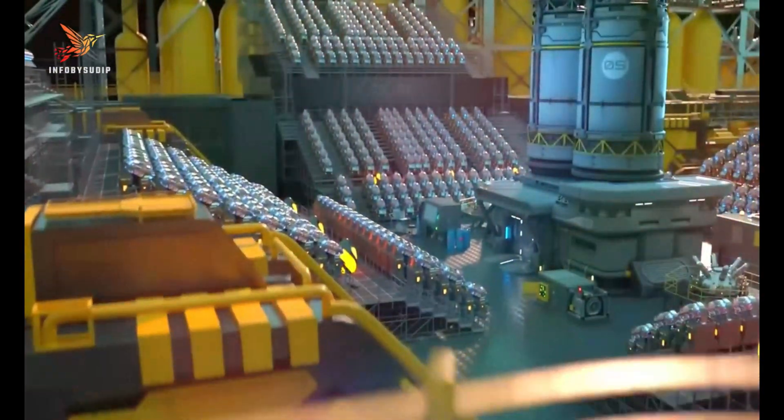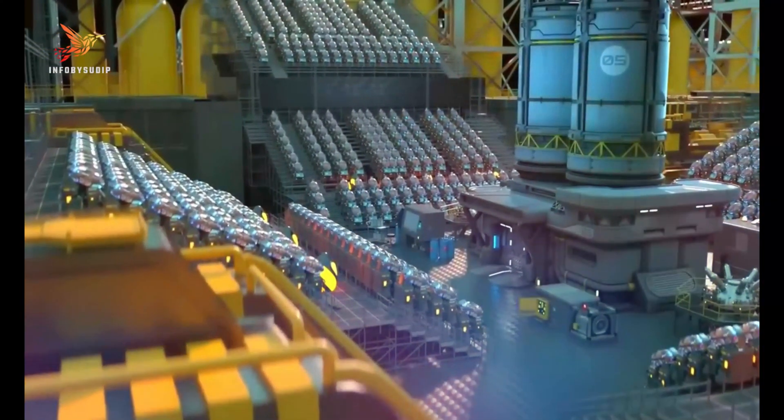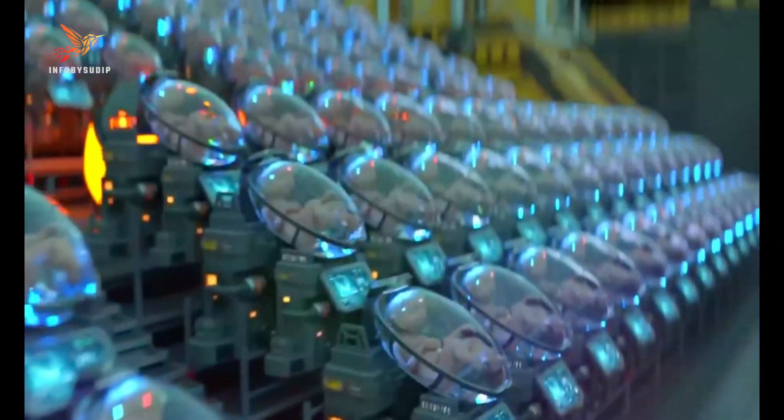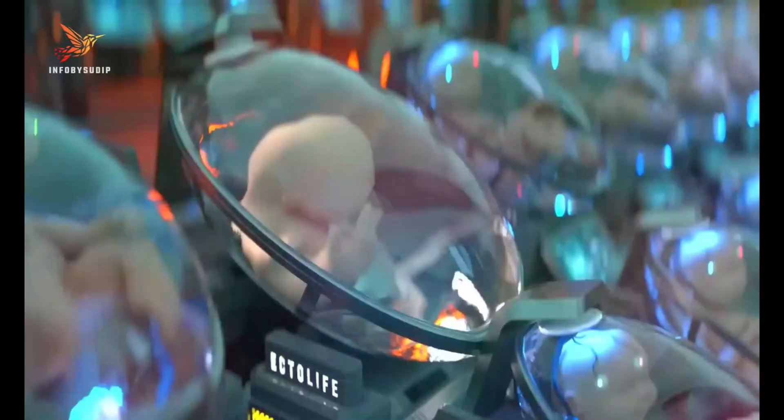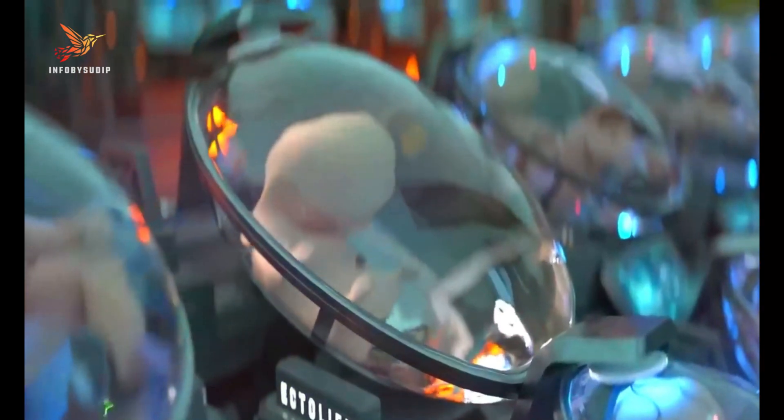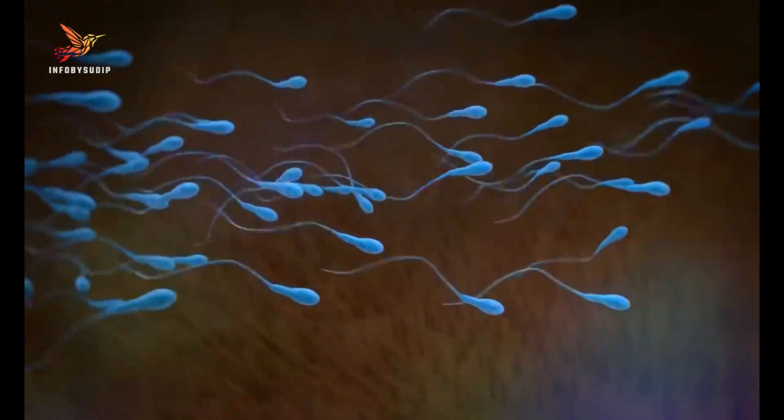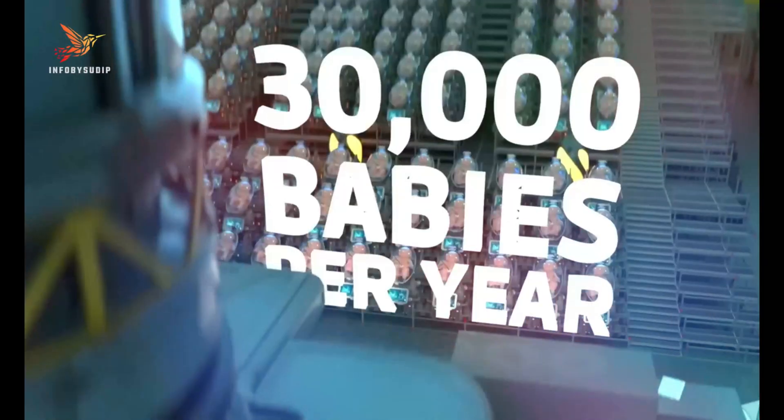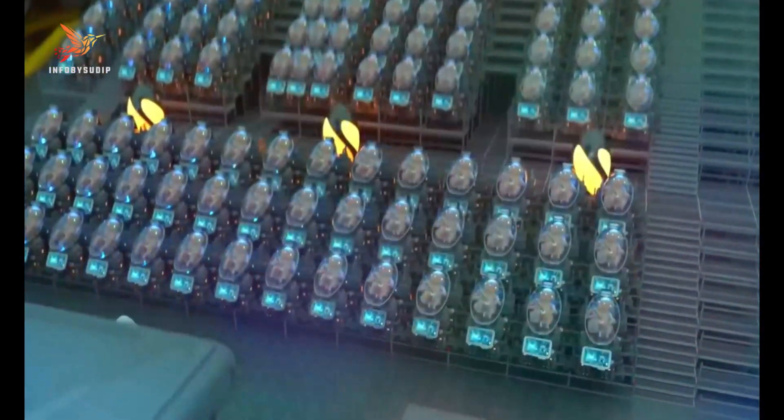Ectolife would consist of a series of 75 labs, each of which could house up to 400 growth pods or artificial wombs. Each pod would be designed to mimic the exact conditions found inside the uterus, including temperature, nutrient levels, and hormone levels.